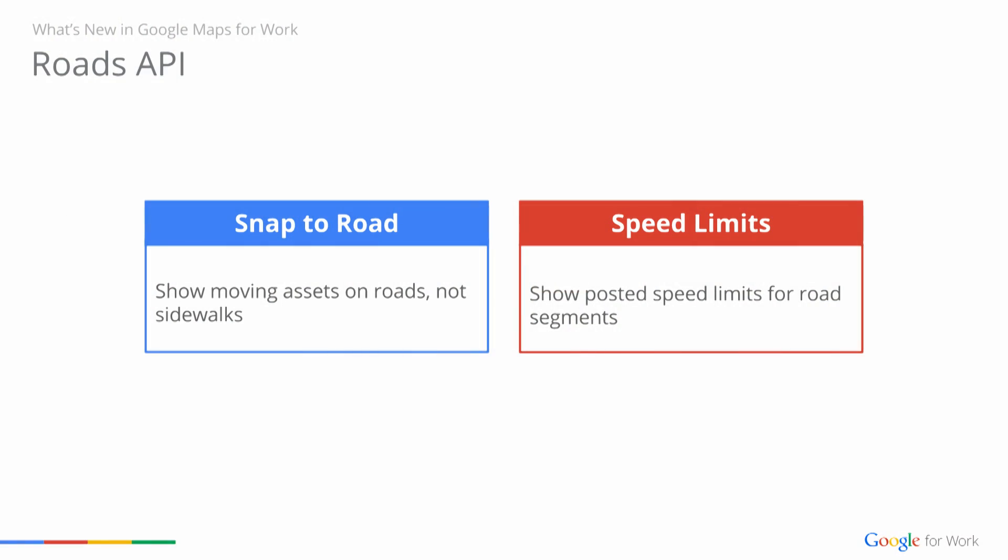Absolutely, Dan. Roads API is a new web service in the Maps API bundle. It comes with two features. Snap to Road lets you snap your GPS coordinates to the nearest road, making sure you visualize your moving assets on roads and not sidewalks, while speed limits give you the posted speed limits for road segments.